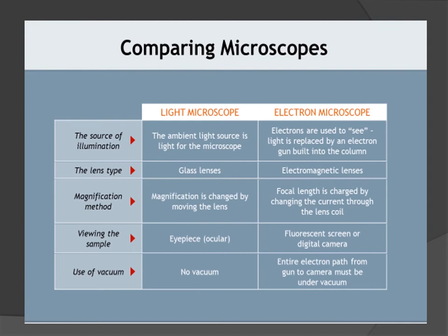We can also compare the light microscope with the SEM: the illumination source — light — is replaced by an electron gun built into the column. The lens type changes from glass lenses to electromagnetic lenses. Magnification in a light microscope is changed by moving the lens, whereas in the EM the focal length is changed by changing the current through the lens coil. The eyepiece or ocular is replaced by a fluorescent screen or digital camera. The EM also requires a vacuum from the gun to the camera, unlike the light microscope.